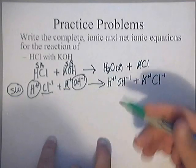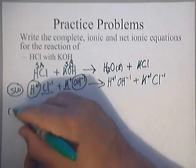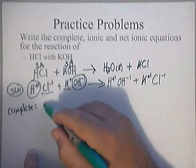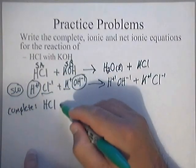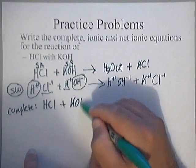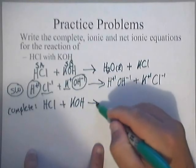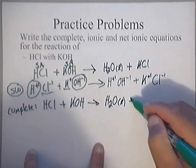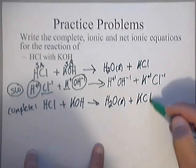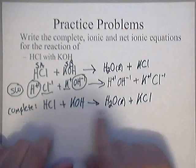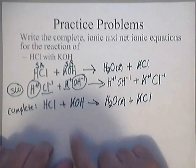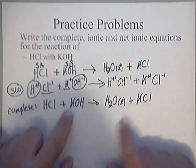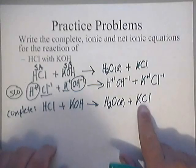Now I can write my complete equation. Just make sure that once you write your complete, you balance it. So that gives you HCl + KOH yields liquid water and potassium chloride. Checking: two hydrogens on each side, one oxygen on each side, one K on each side, one Cl on each side — it's balanced.